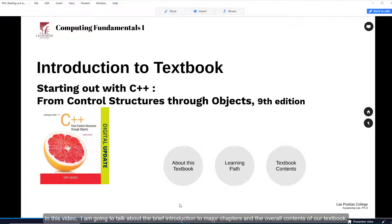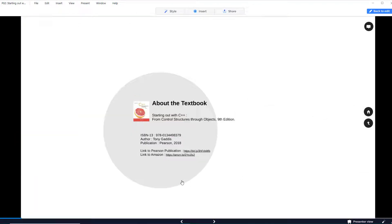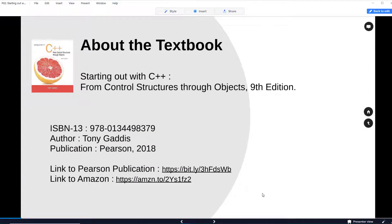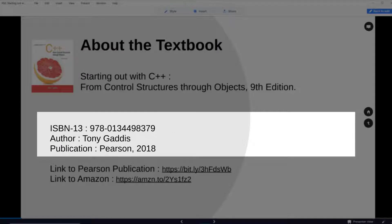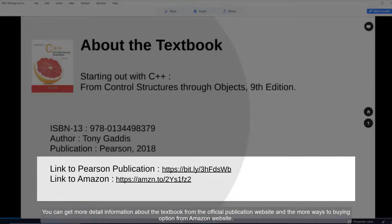In this video I'm going to talk about a brief introduction to major chapters and the overall contents of our textbook. The title of our textbook is Starting Out with C++ From Control Structures Through Objects, 9th Edition, authored by Tony Gaddis from Pearson publication. Here is the ISBN number. You can get more detailed information about the textbook from the official publication website and more ways to buy from Amazon website.